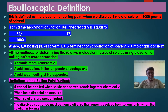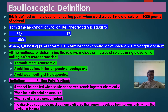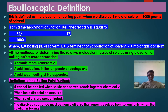In most cases, the ebullioscopic constant k_e is given, but when it is not, we can use equation 7 to calculate it. For accurate determination of relative molecular mass, certain conditions must be followed: accurate measurement of ΔT, avoiding fluctuations in temperature readings, and avoiding superheating of the apparatus. The limitations of the boiling point method are: it cannot be applied when the solute and solvent react chemically, when ionic dissociation occurs, when solutions are concentrated (it must be a dilute solution), and the dissolved solute must be non-volatile.